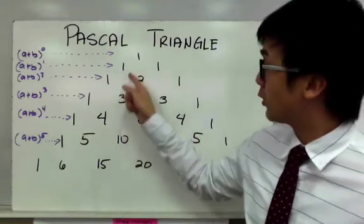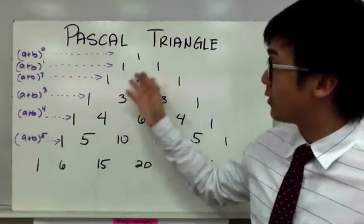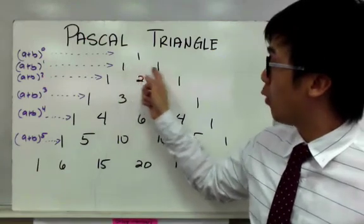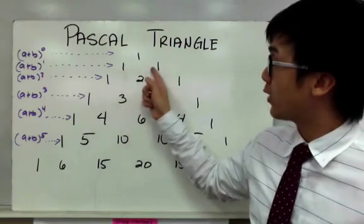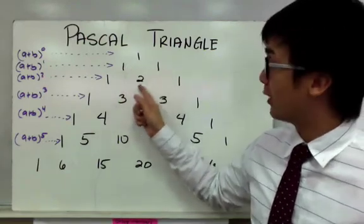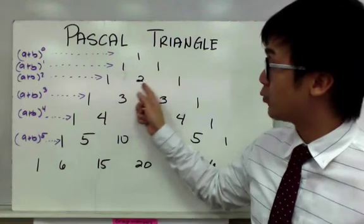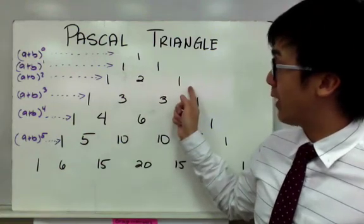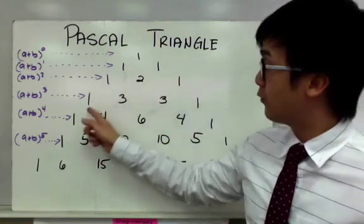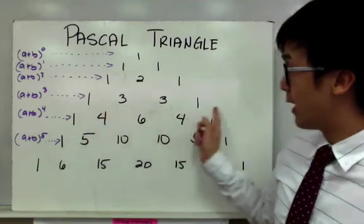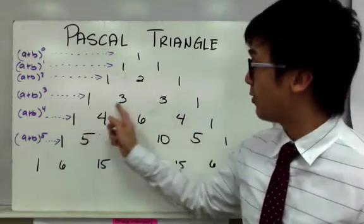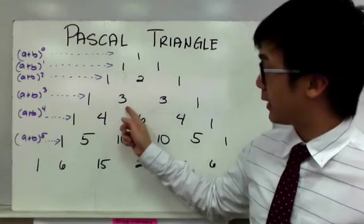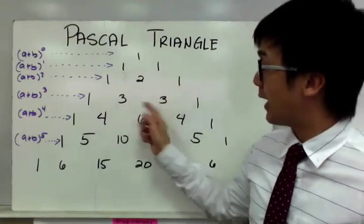How do we get the numbers in the middle? It's pretty simple. The numerical value in the middle is the sum of the two values above it. So if you have 1 and 1, add them together and you'll have 2. That's why you have 1, 2, and 1 in the third level of your Pascal's Triangle. On the fourth level you have 1, 3, 3, and 1 because 1 plus 2 is 3 and 2 plus 1 is 3.